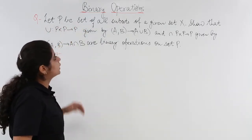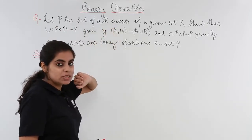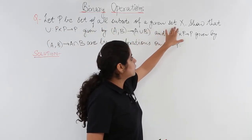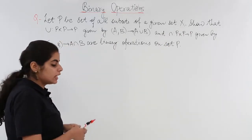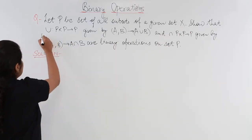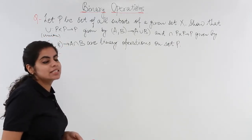Let P be the set of all subsets. So P is a set of all subsets given on a set X. Show that union - this operation written here is called the union operation which we have already studied in set theory.